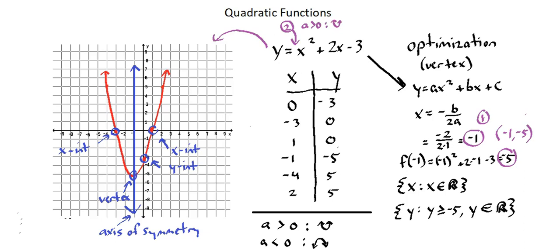Number three, we can identify the y-intercept by inputting x into the function and solving for y. Number four, we can identify our x-intercepts, if any. This comes from factoring or from using the quadratic formula.